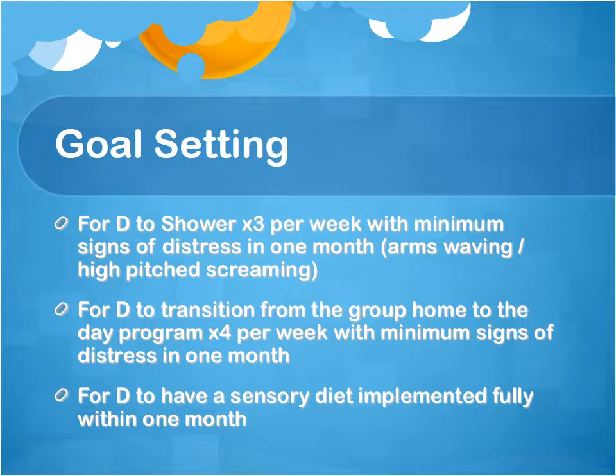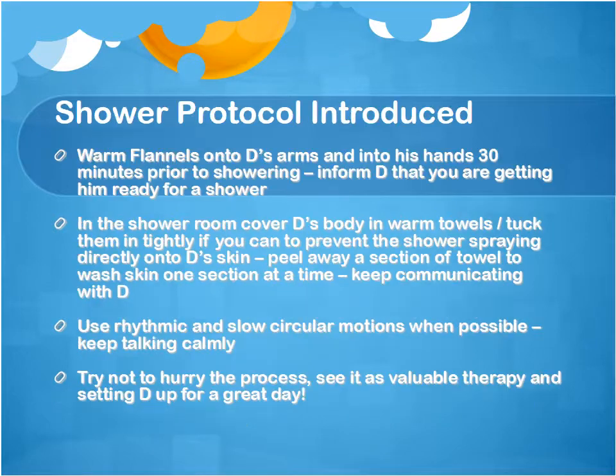Identifying these different sensory preferences, I then established some goals to work towards. Some of the goals established were: to shower three times a week with minimum signs of distress, to transition from the group home to the day program four times a week within one month, and for a sensory diet to be implemented fully within one month.